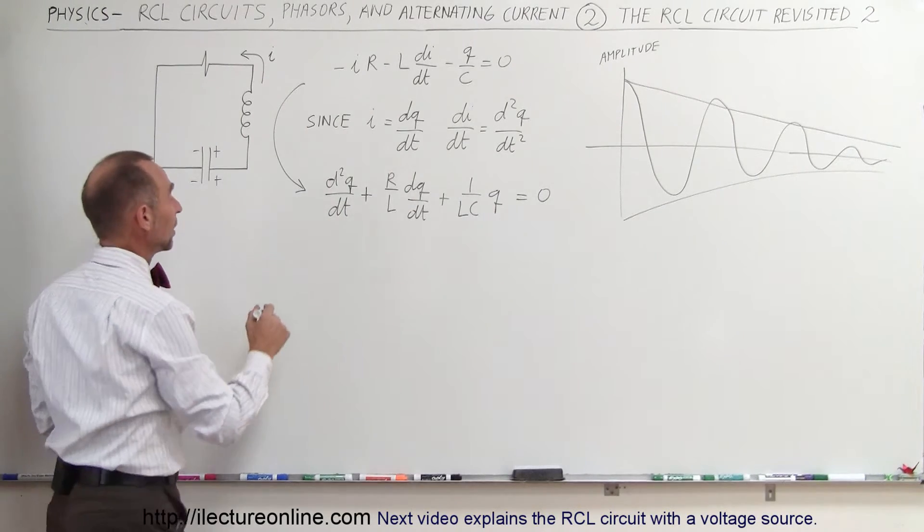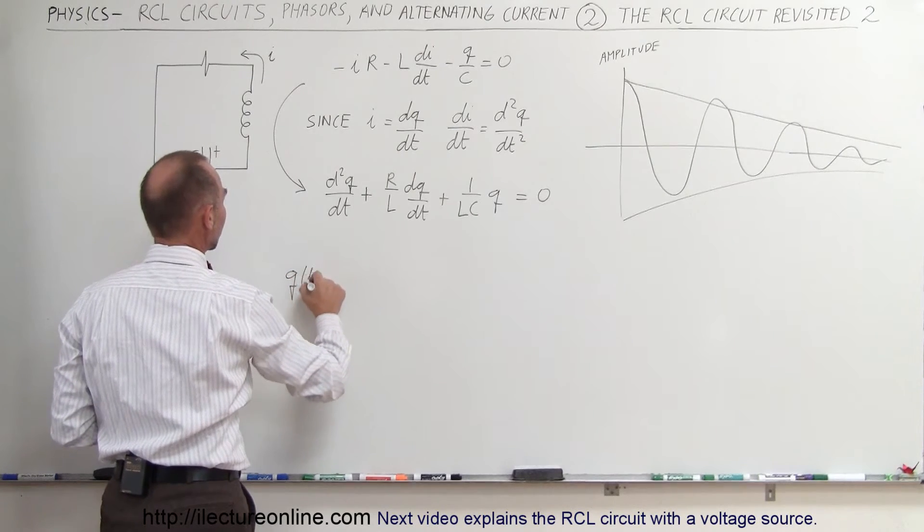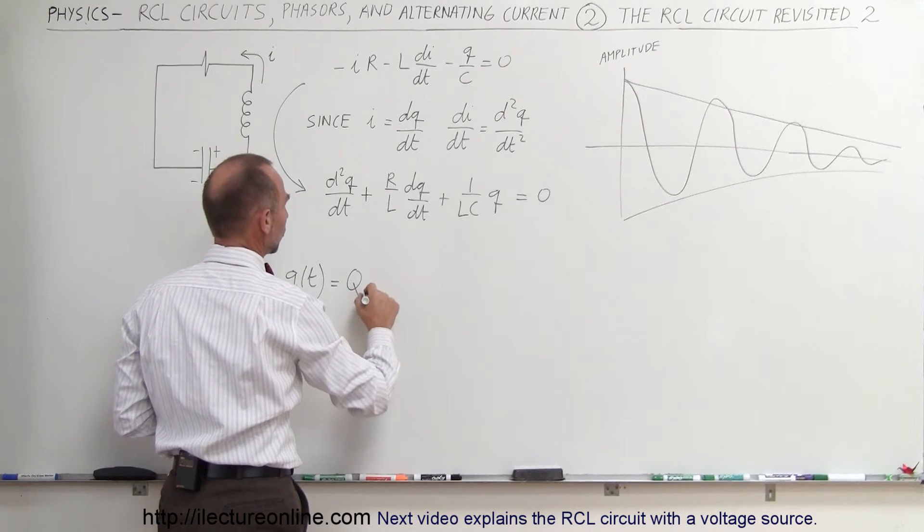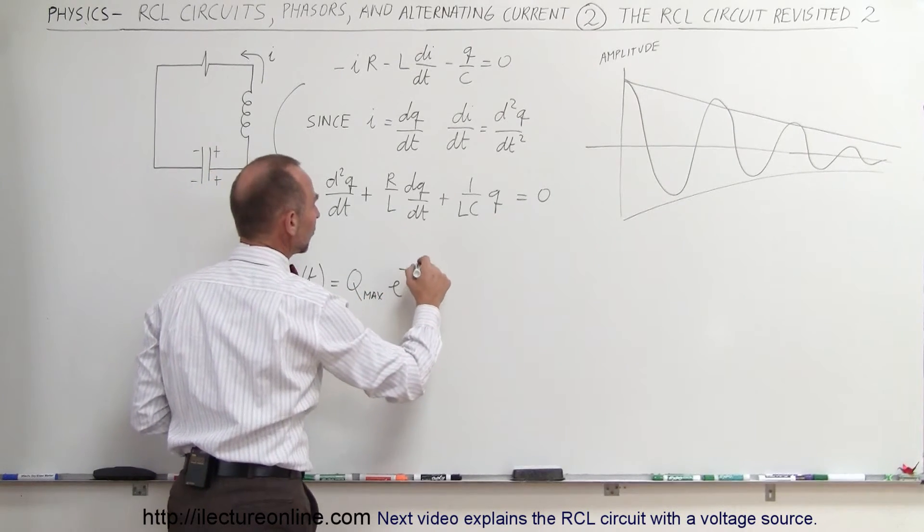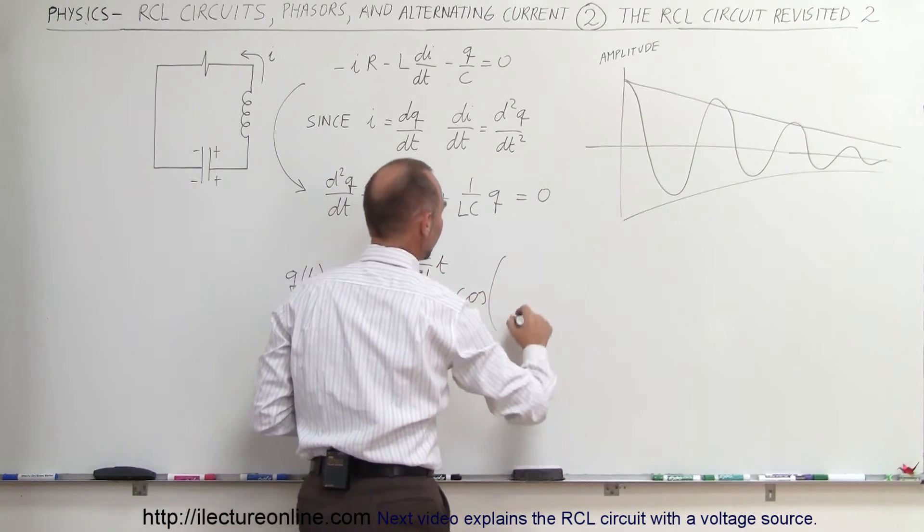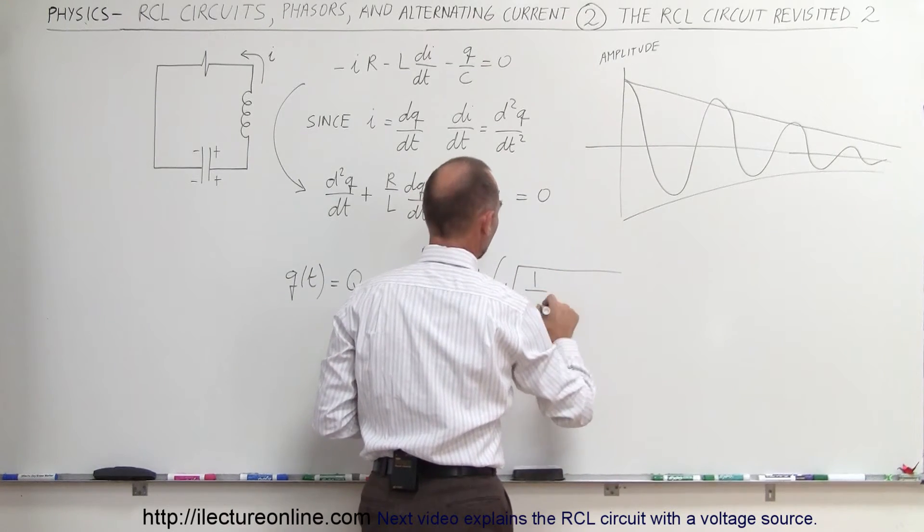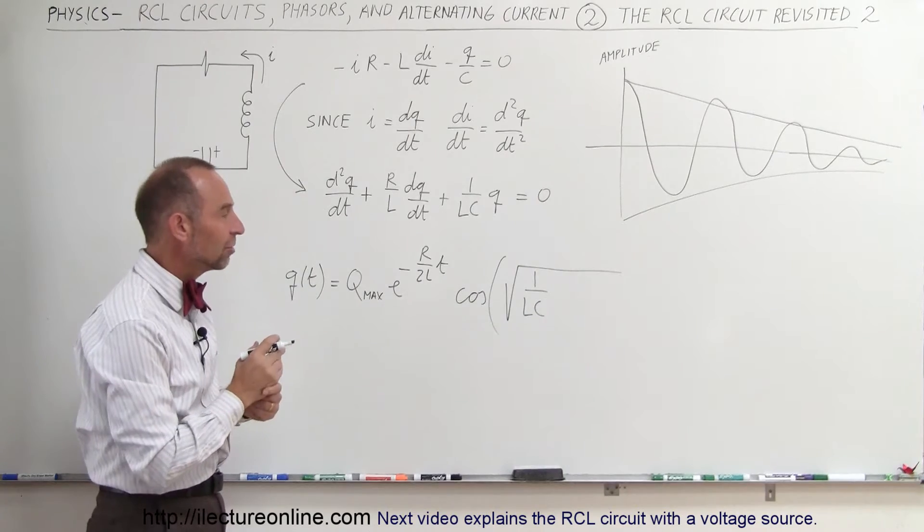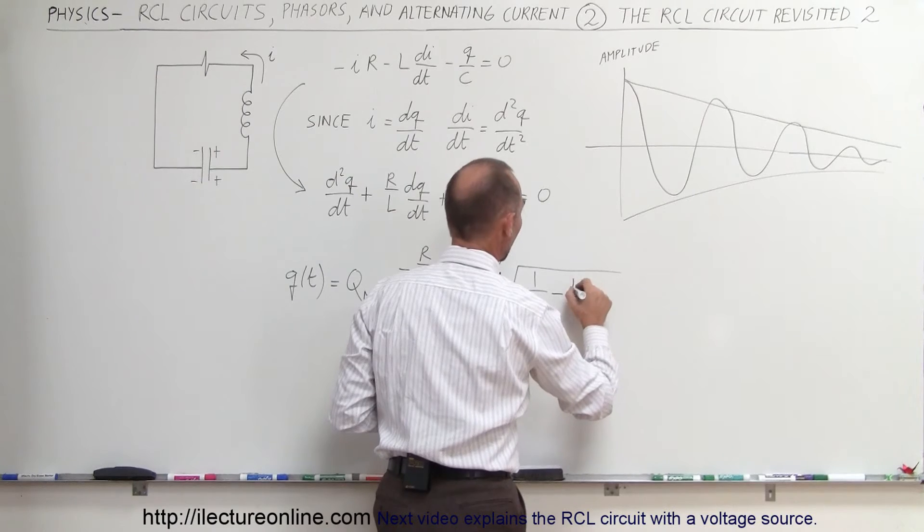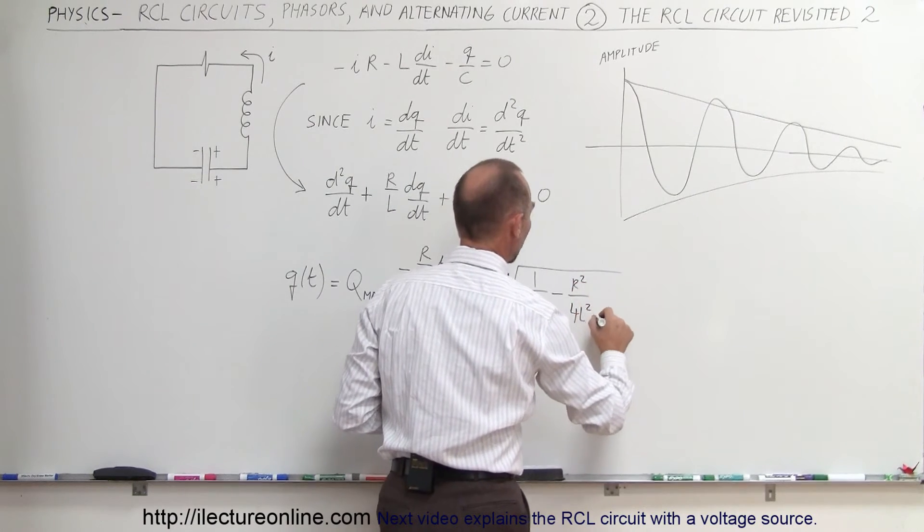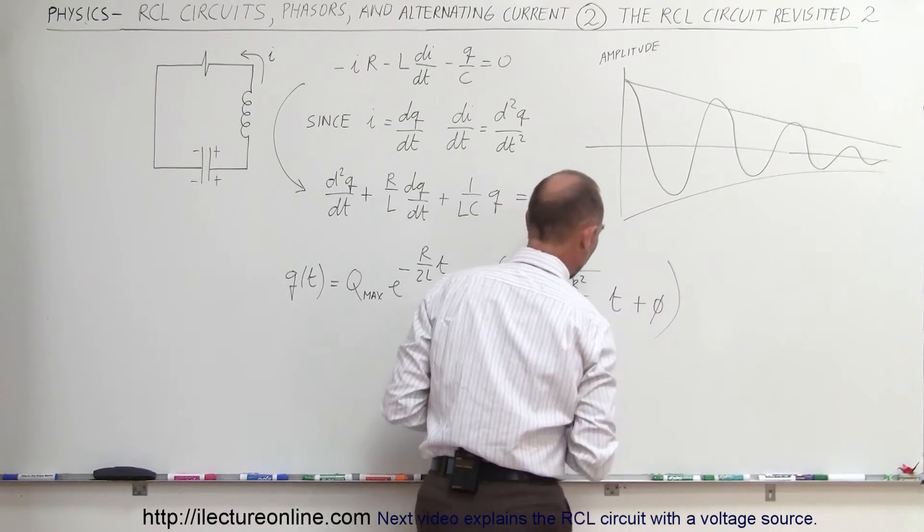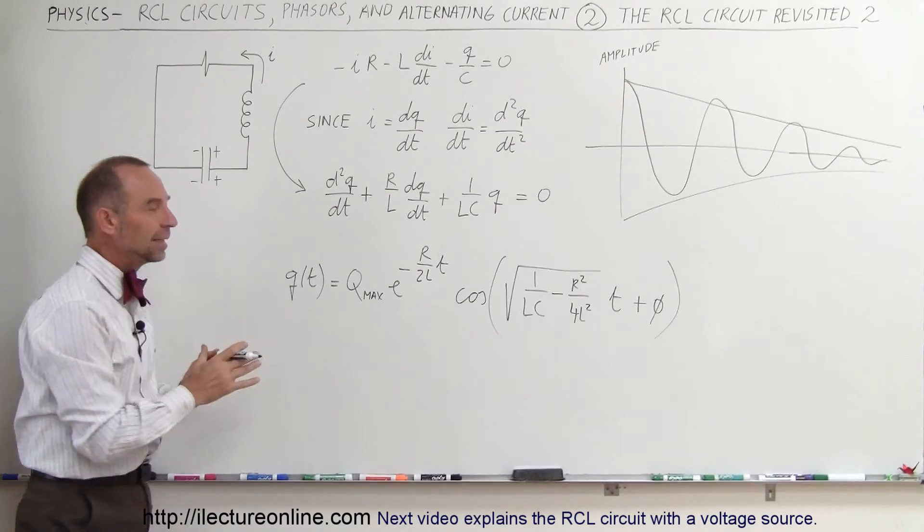And that will be the solution to this equation. We can then say that the charge as a function of time across the capacitor can be expressed as the total charge Q max on the capacitor, times e to the minus R divided by 2L times the time, times the cosine of the square root of 1 over LC minus R squared divided by 4L squared, times the time, plus of course any sort of phase angle if we don't start at t equals zero at a particular location.